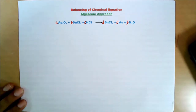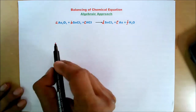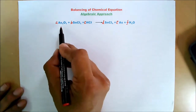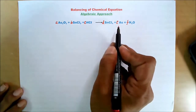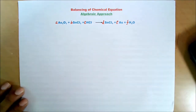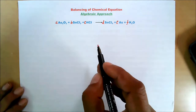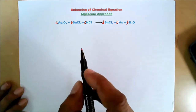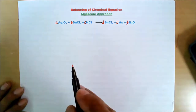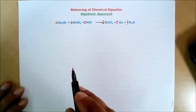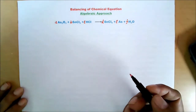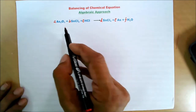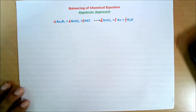The law of conservation of mass states that the number of atoms on the left-hand side should be equal to the number of atoms on the right-hand side. The minimum value of a coefficient can be 1. So the minimum value of either A, B, C, D, E, or F can be 1.